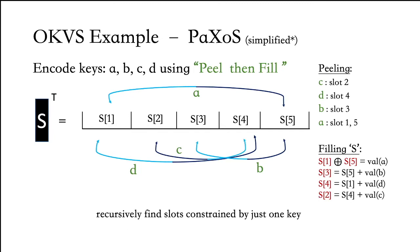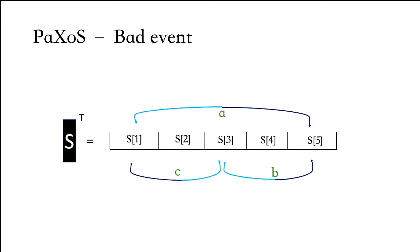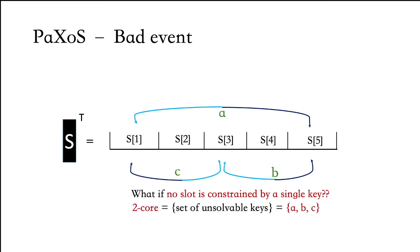But a natural question is: does encoding always work? Are there any bad events that prevent successful encoding of keys? Consider a situation where no slot is constrained by a single key — how do we resolve this cycle? In Paxos, they call the set of all keys that are not solvable the two-core. Here, the two-core consists of keys A, B, and C.